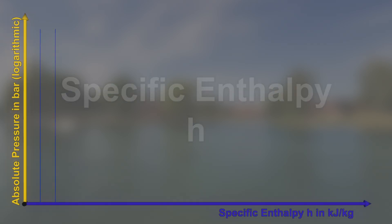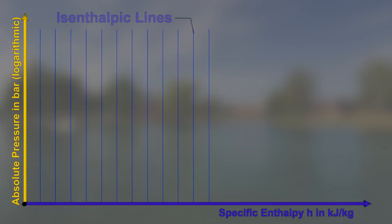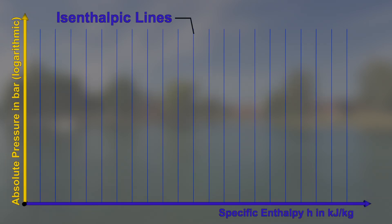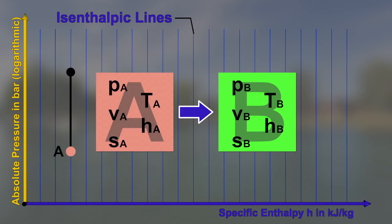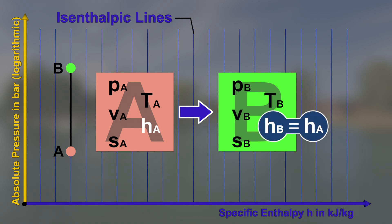Lines with constant specific enthalpy h are called isenthalpic lines. They stretch vertically because h is plotted on the horizontal axis. If a state of a fluid changes from state A at constant specific enthalpy h along an isenthalpic line to state B, we call it an isenthalpic change of state.